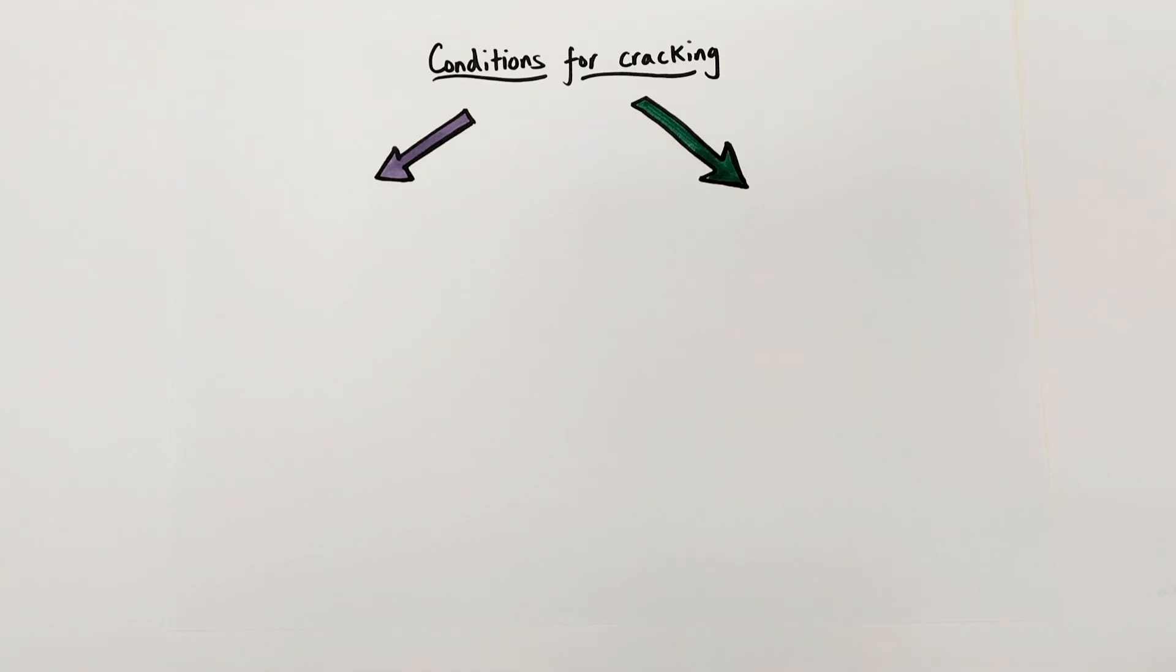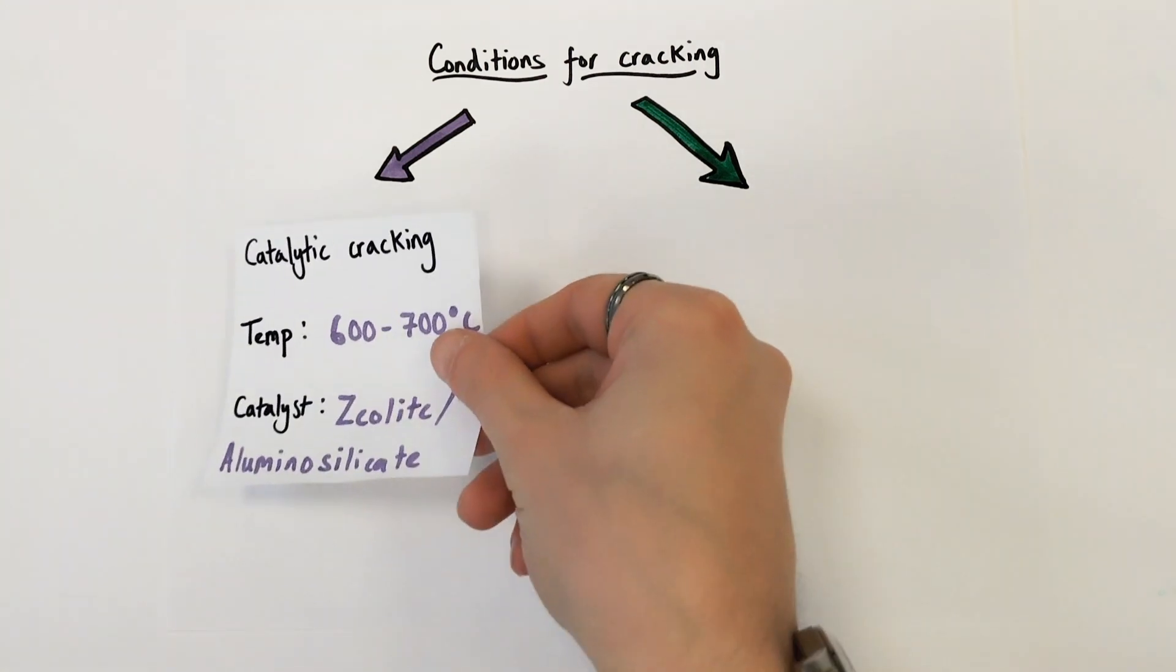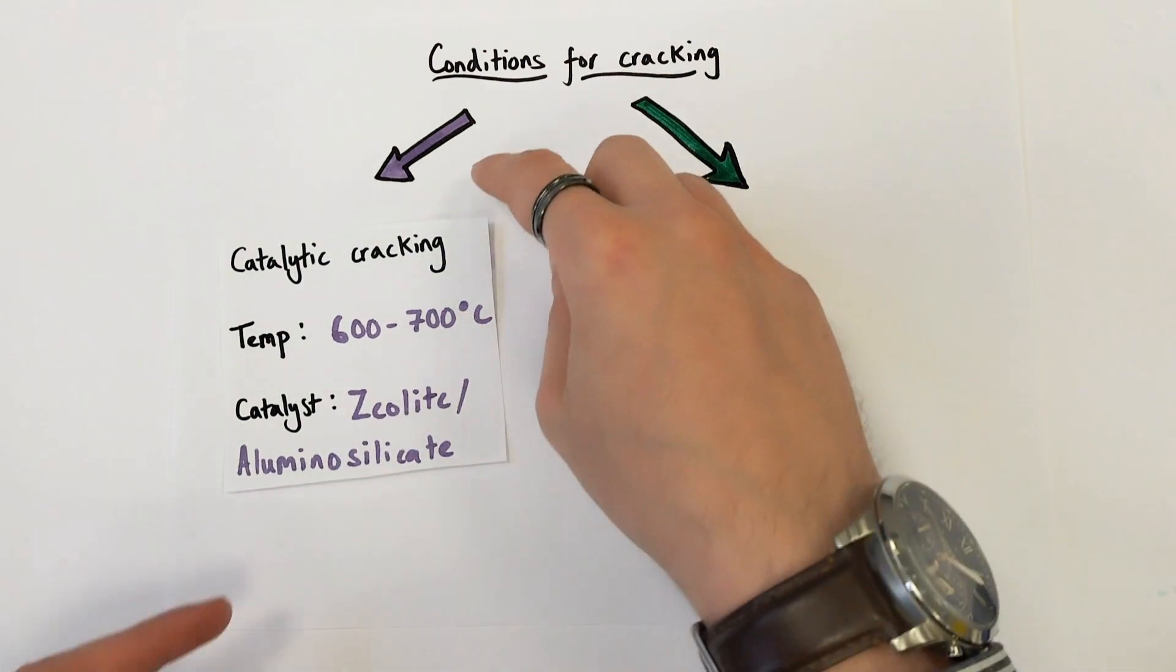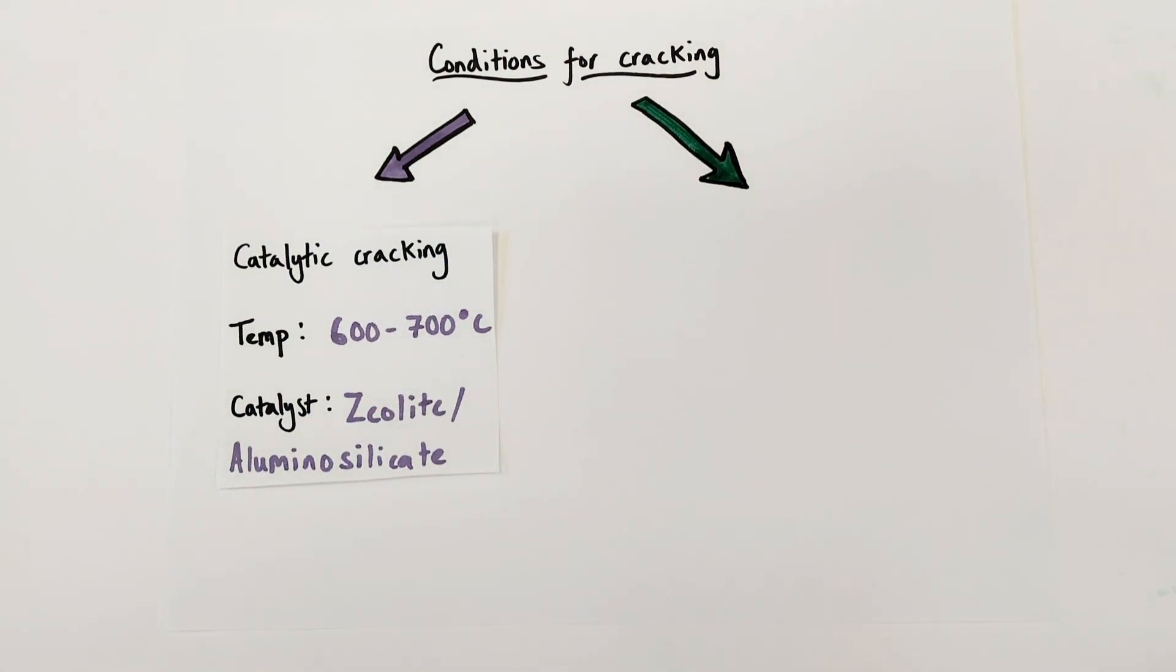So industrially there are two main methods for cracking hydrocarbons. The first is known as catalytic cracking. This is where we use temperatures of between 600 to 700 degrees centigrade and a catalyst must be present known as zeolite. That's a form of alumina silicate.